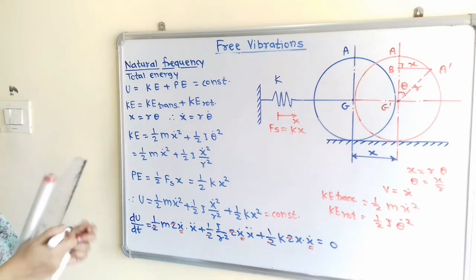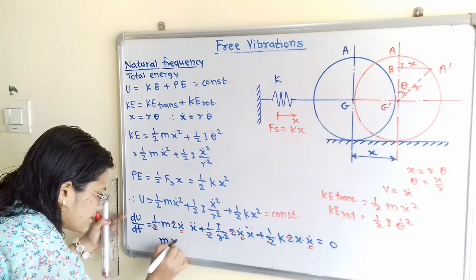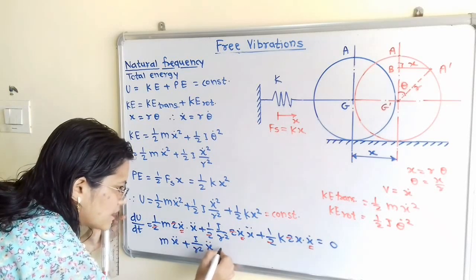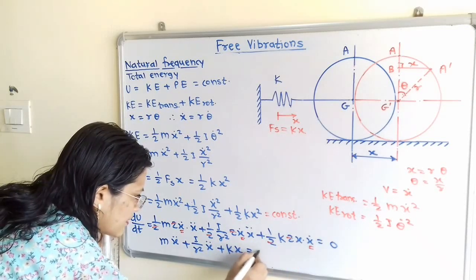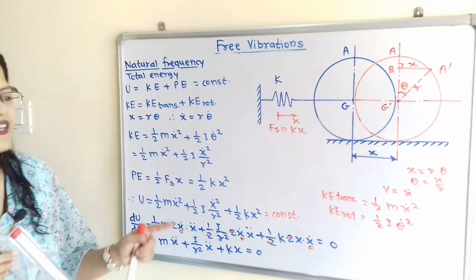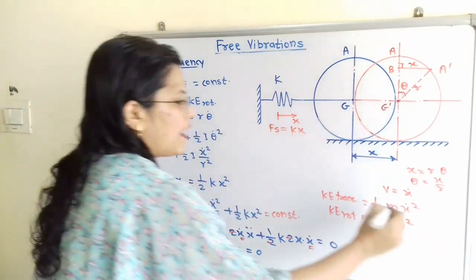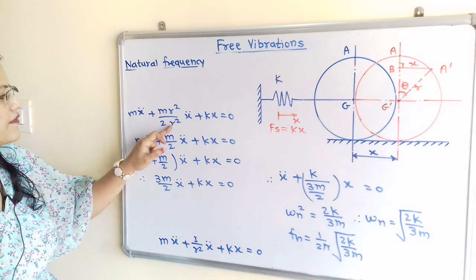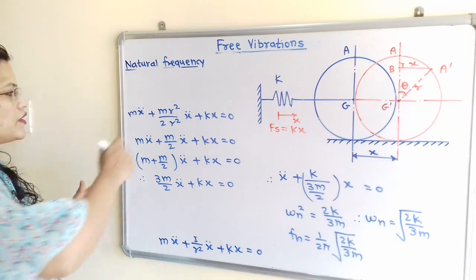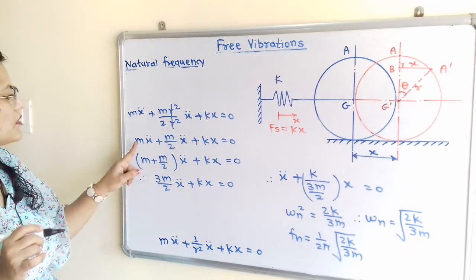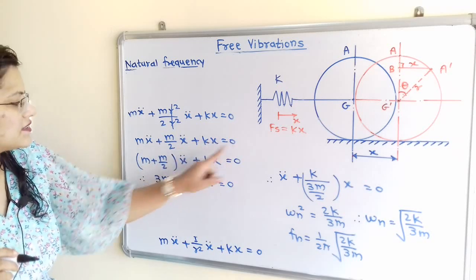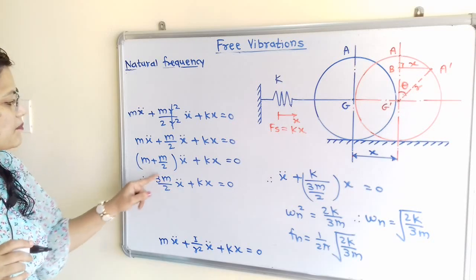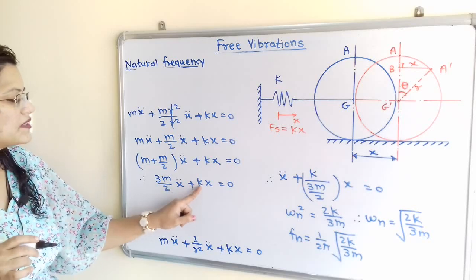The simplified equation of motion becomes: mẍ + (I/R²)ẍ + Kx = 0. The mass moment of inertia for the disk is I = mR²/2, so substituting: mẍ + (mR²/2)/R²·ẍ + Kx = 0. R² cancels, giving mẍ + (m/2)ẍ + Kx = 0, which simplifies to (m + m/2)ẍ + Kx = 0, or (3m/2)ẍ + Kx = 0.